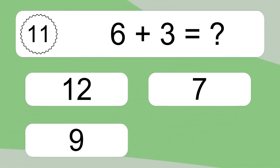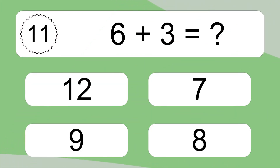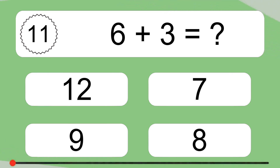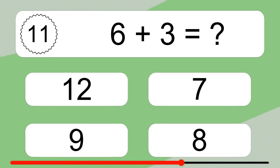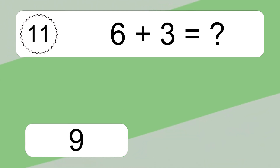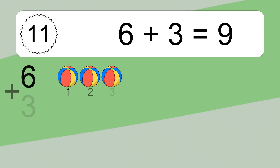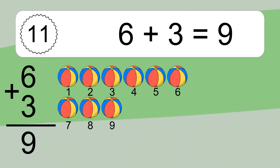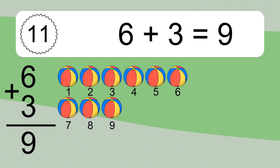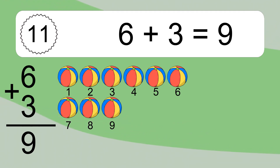6 plus 3 equals what? 6 plus 3 equals 9. Let's count it: 1, 2, 3, 4, 5, 6, 7, 8, 9.